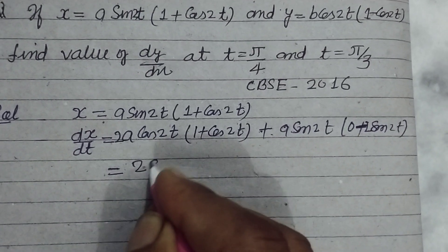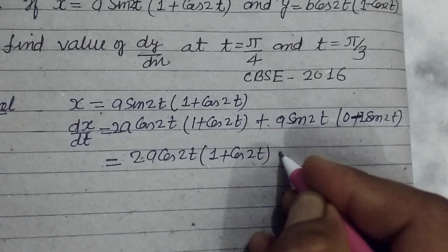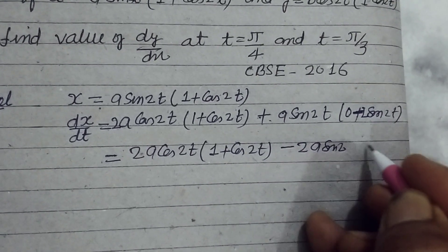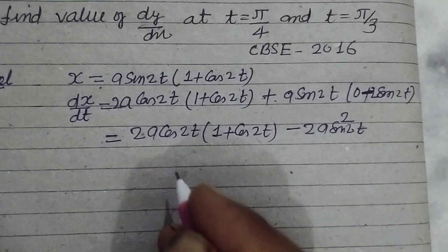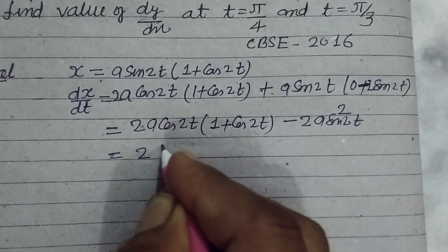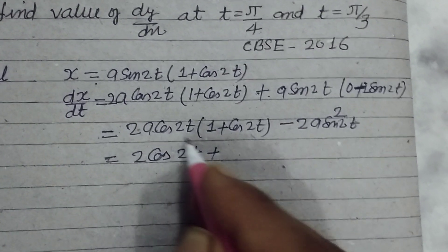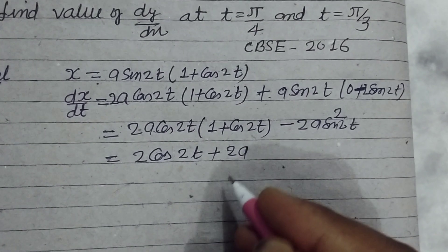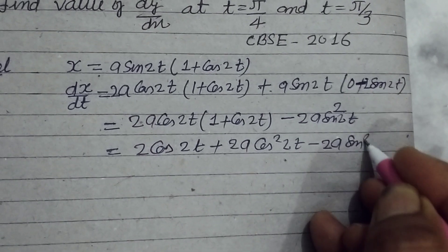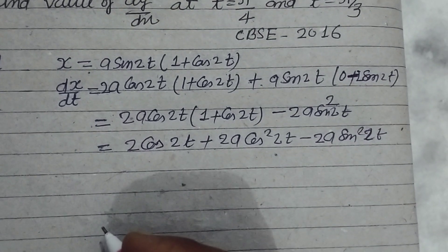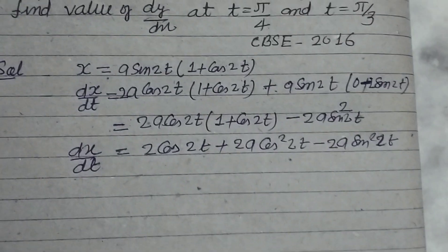So we get 2a cos 2t (1 + cos 2t) minus 2a sin²2t. This simplifies to 2a cos 2t + 2a cos²2t - 2a sin²2t. This is dx/dt.